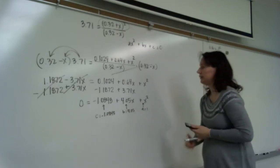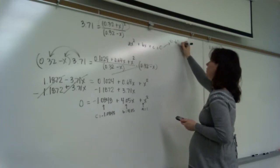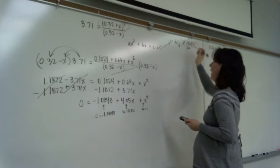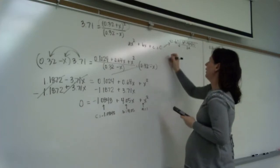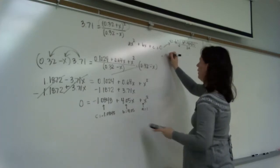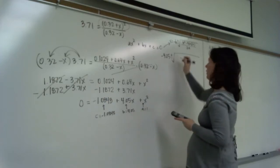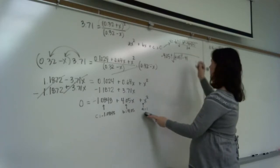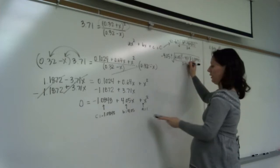The quadratic formula gives x equals negative b plus or minus the square root of b² minus 4ac, all over 2a. So we plug in: x equals negative 4.05 plus or minus the square root of 4.05 squared minus 4 times 1 times negative 1.0848, all divided by 2 times 1.